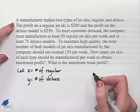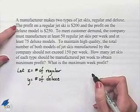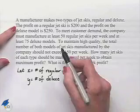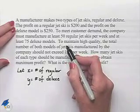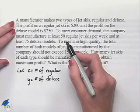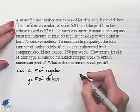Next, let's set up some information dealing with what's given to us. We're trying to maximize the profit and we're told in our second sentence that the profit is $200 on a regular jet ski and $250 on a deluxe model. That's going to be our objective function.